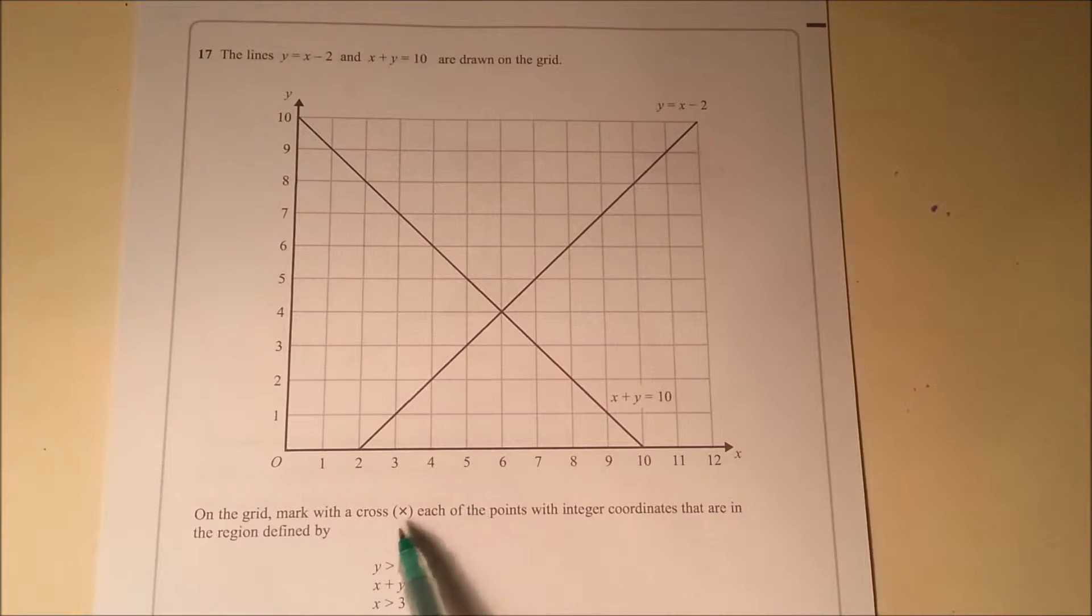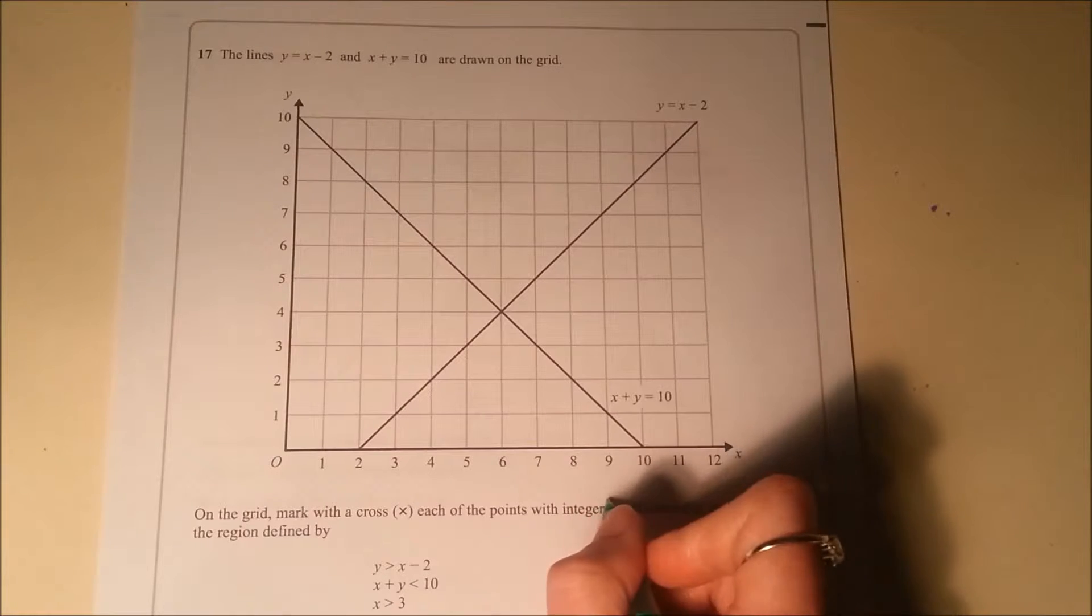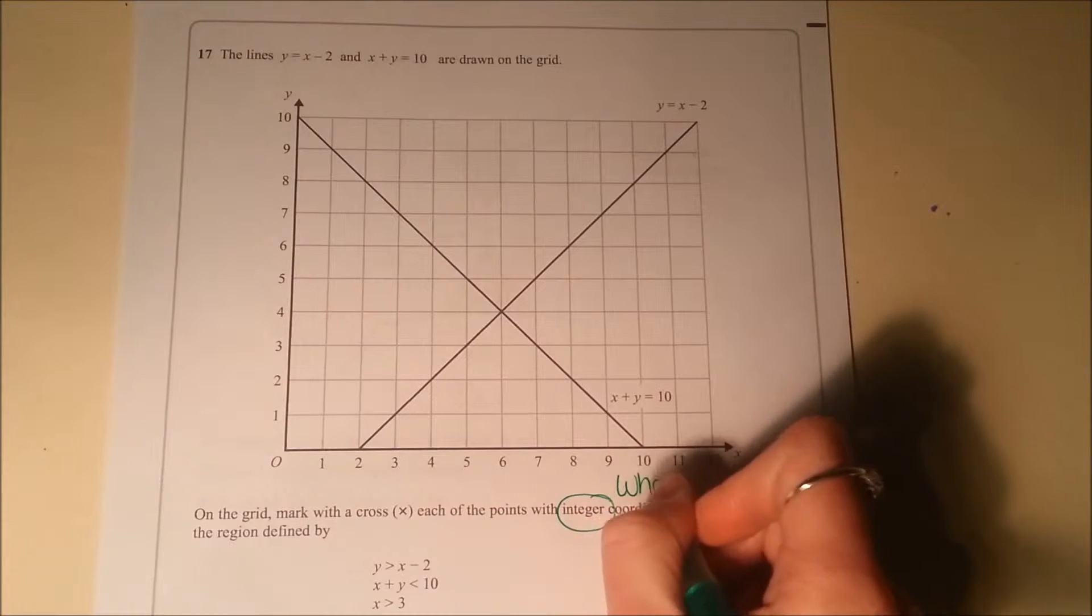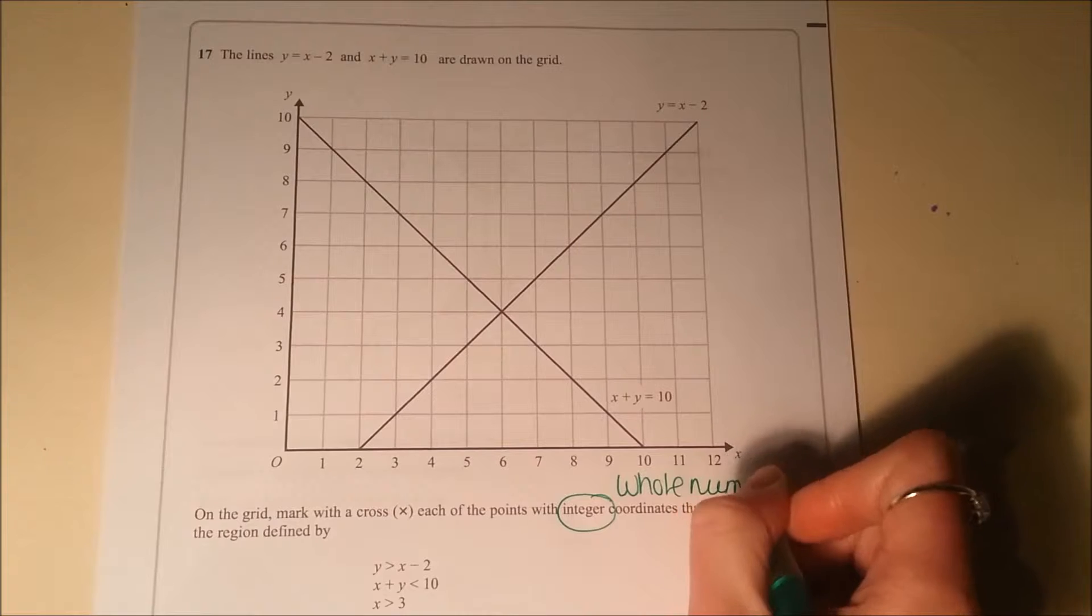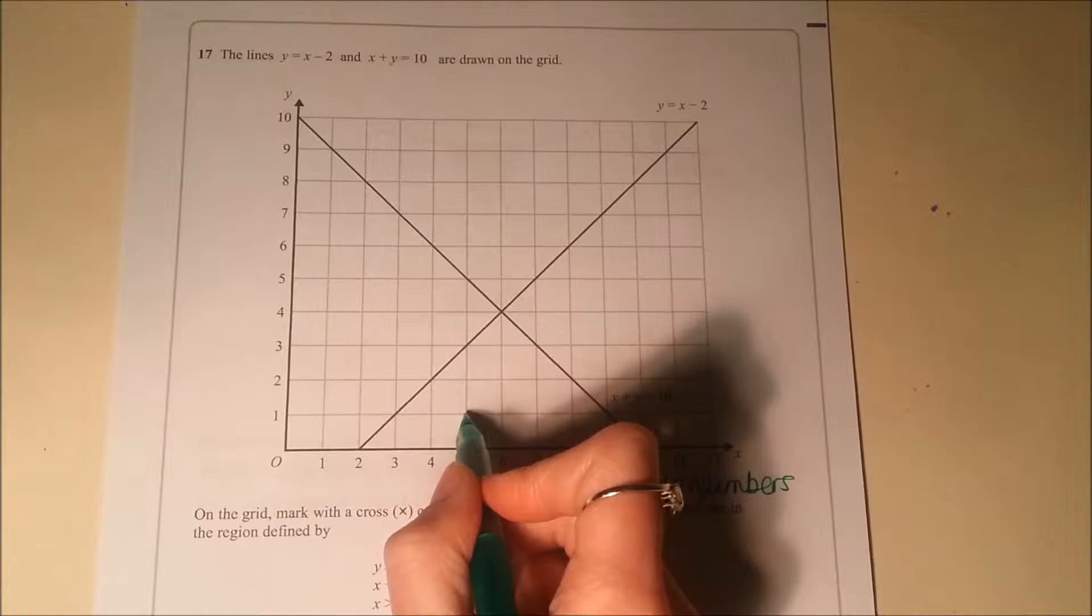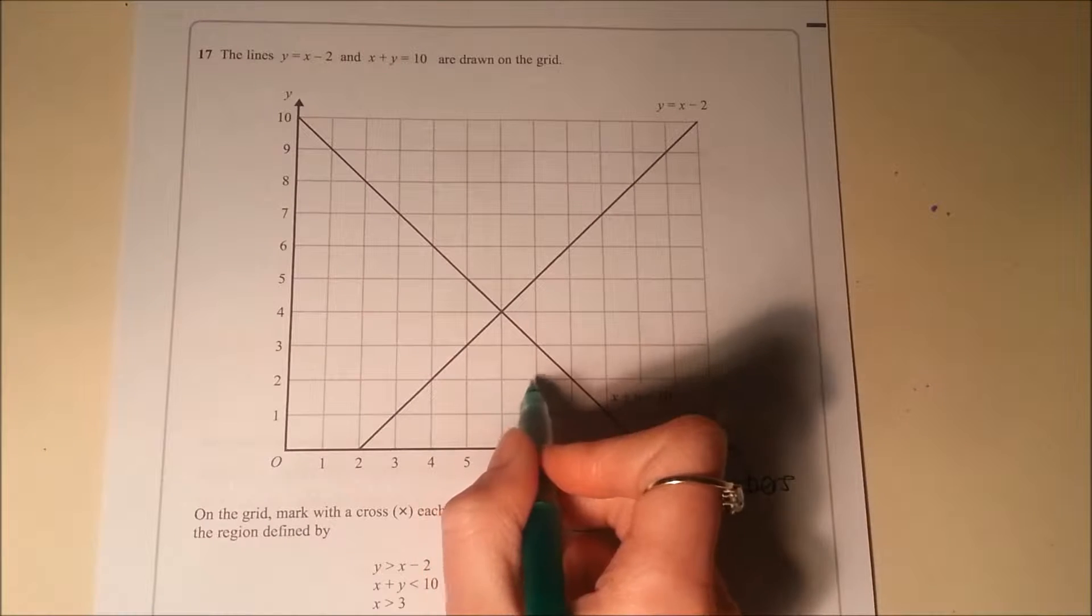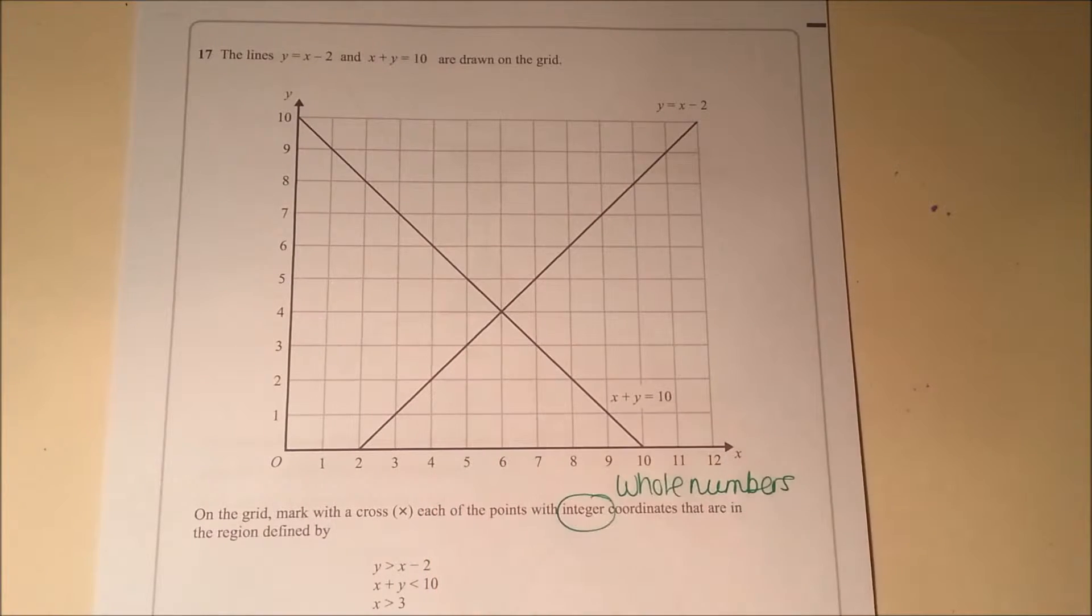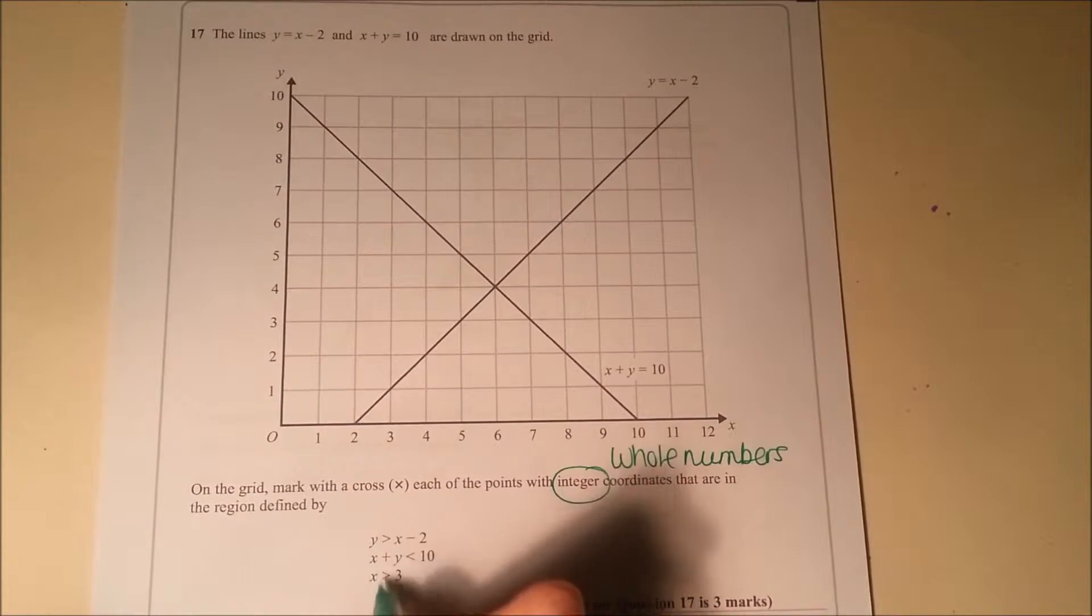We've got to mark all the points with integer coordinates, so that means whole numbers. In this question it means we're just looking at where there are actual physical points on the graph, not any halfway values in the region defined by these inequalities.